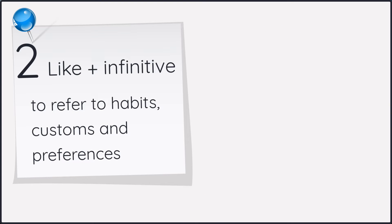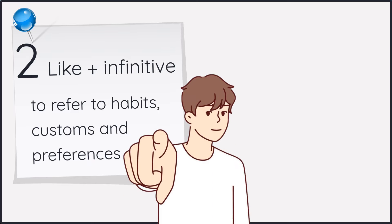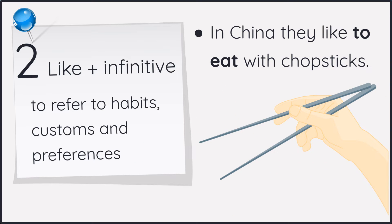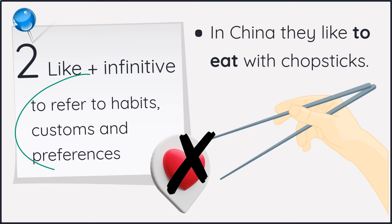Number two, use like plus infinitive to refer to habits, customs and preferences. Okay, so we use like plus infinitive to talk about habits, customs and preferred behavior. This can be about yourself or a group of people. For example, in China, they like to eat with chopsticks. This doesn't mean that they enjoy using chopsticks. No, it just means that they have the habit. They have that custom.